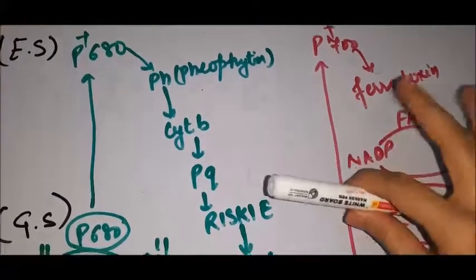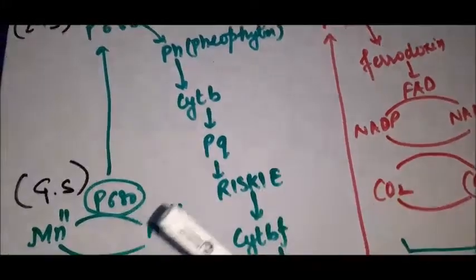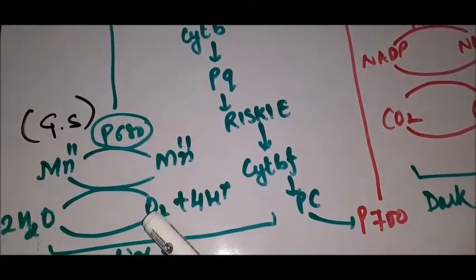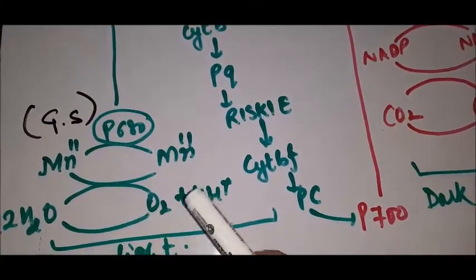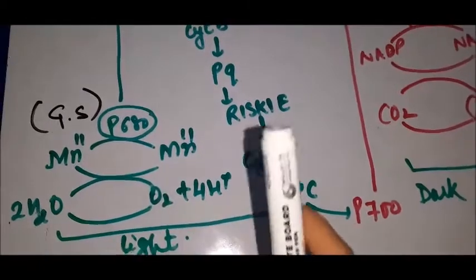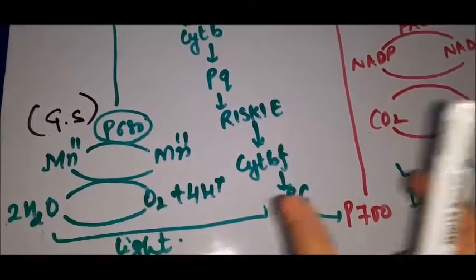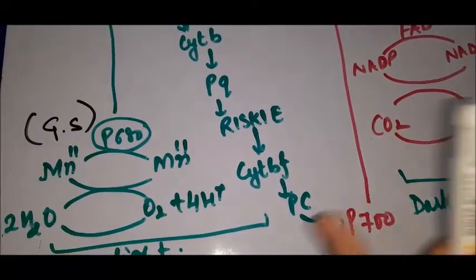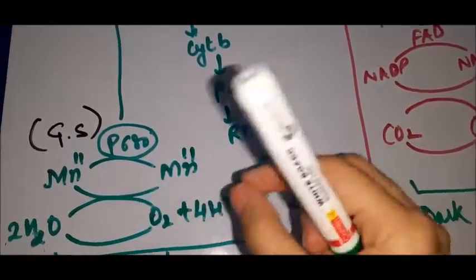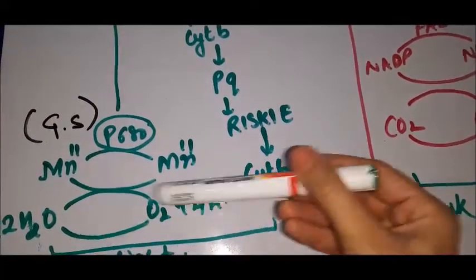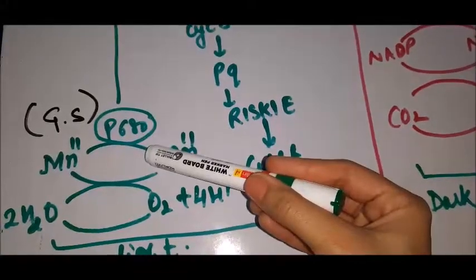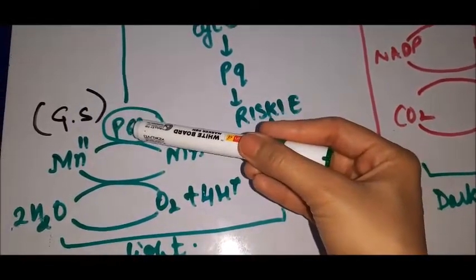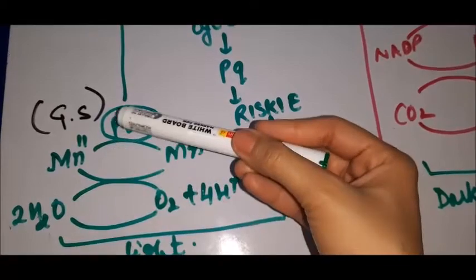In the photosynthesis cycle, water is oxidized: 2H2O gives O2 plus 4H⁺. This reaction is driven by P680 in the light reaction, and P700 operates in the dark reaction. The Mn complex gives electrons to P680 — this is the key electron transfer step. The question of how many H⁺ are produced: 4H⁺ come from water oxidation.